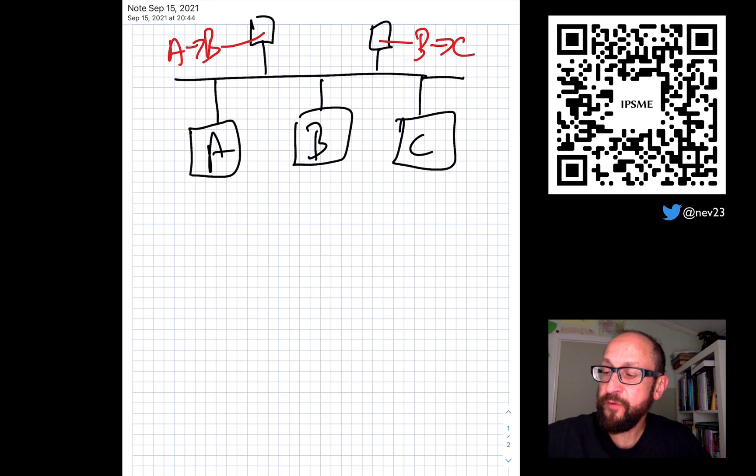But that means we also have a translation from A to C through transitivity. So IPSME allows also the lowering of complexity by reusing translations in the system.